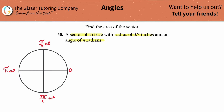We have an angular measurement of pi radians. If I take a radius and rotate it around the circle pi radians, that brings me all the way over to the opposite side. It's literally the same thing as 180 degrees — pi radians is equivalent to 180 degrees.